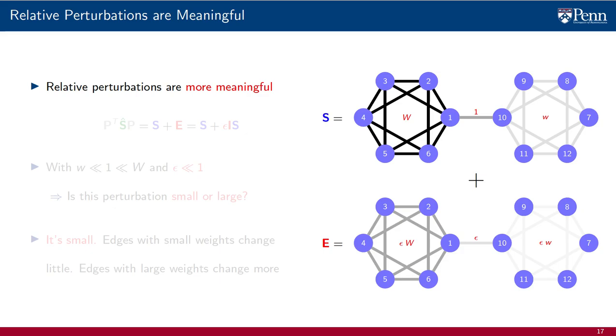The edges of the error matrix for the community on the left are proportional to capital W. They are epsilon times uppercase W. And the edges for the community on the right are proportional to lowercase w. They are epsilon times w. The intercommunity link is epsilon. The perturbed matrix is the addition of these two modulo permutations to account for possible relabelings.